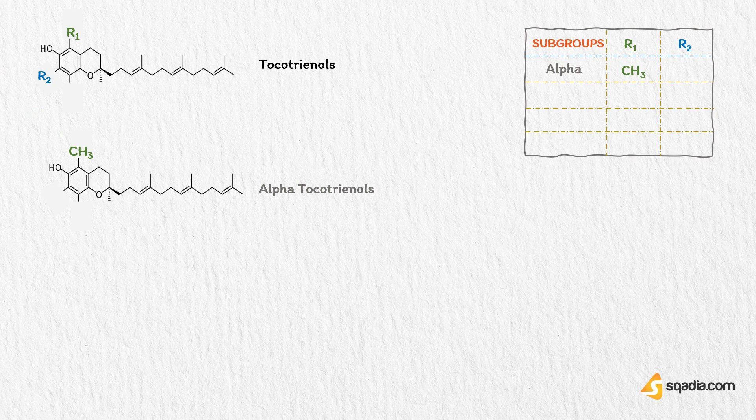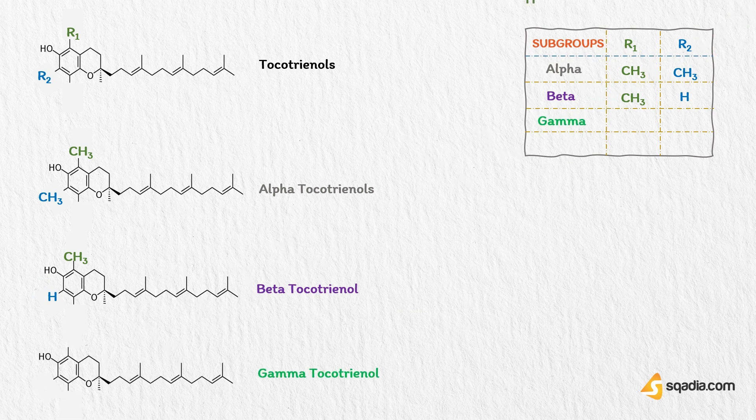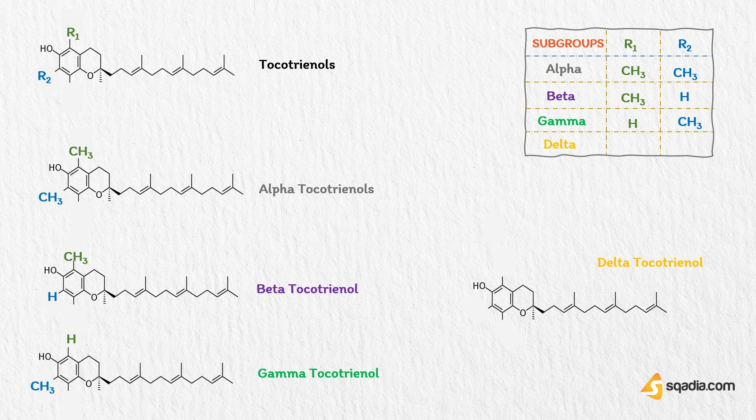In case of beta-tocotrienol, R1 is CH3 and R2 is H. In the structure of gamma-tocotrienol, R1 is H and R2 is CH3. While in case of delta-tocotrienol, R1 is H and R2 is also H.